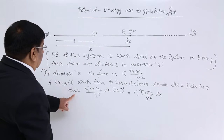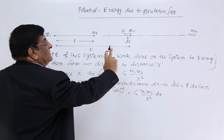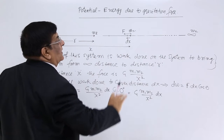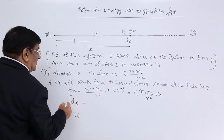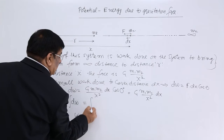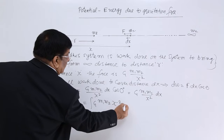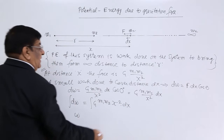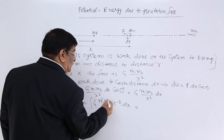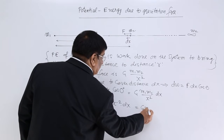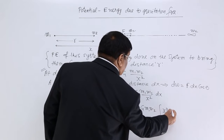Now we want to calculate the complete work done from infinity to this point r. The total work done is W. So when we integrate dW, this will become W. Integration of dW is integration of G m1 m2 x to the power minus 2 dx. G, m1, and m2 are constants and come out, leaving us to integrate x to the power minus 2 dx only.